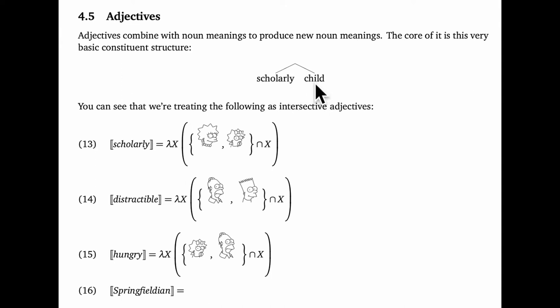We're going to define the adjective scholarly as a function that takes in the meaning of child to produce something that is semantically also a noun meaning, that is a set of entities from our universe. Let's look, in fact, at the assigned meaning in 13.